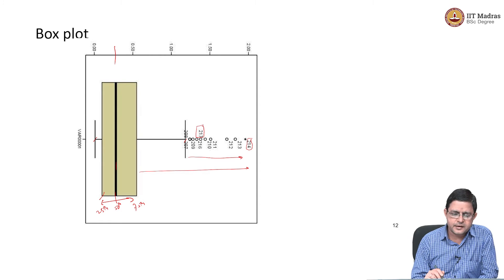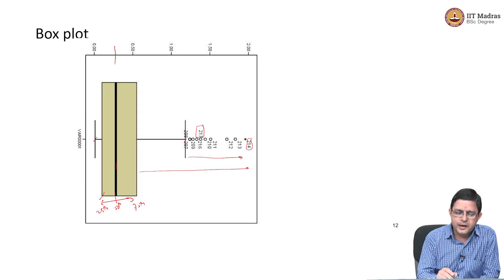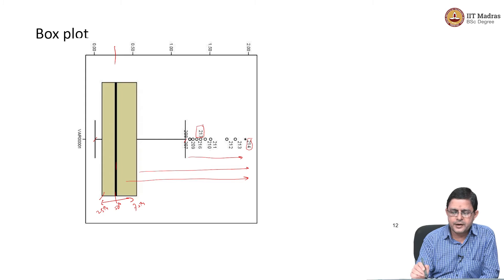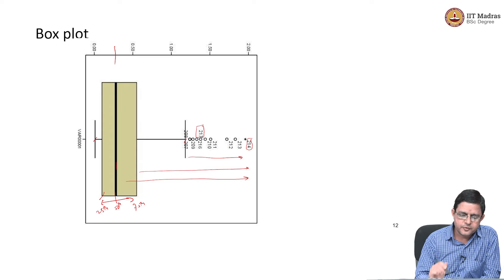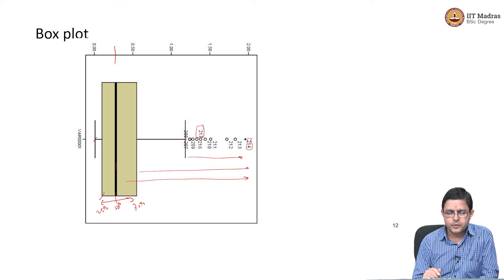The left whisker seems to be only up to a small range, while the right whisker extends much further, with values beyond the right whisker as well. The only point I wish to emphasize from the box plot is that values on the right-hand side are extending well into the right side of the x-axis, which essentially means this distribution has a right skew — a positive skew.